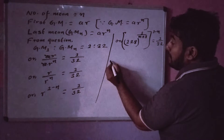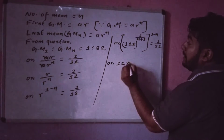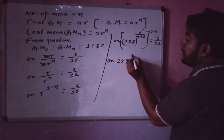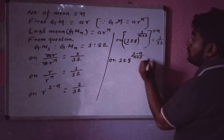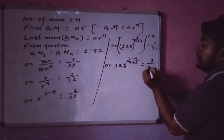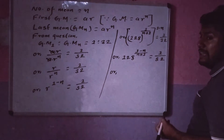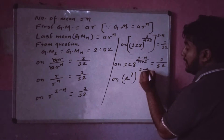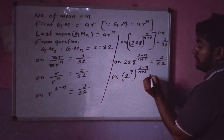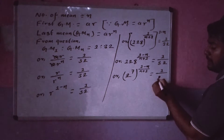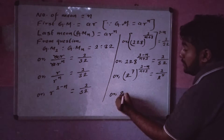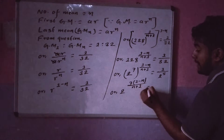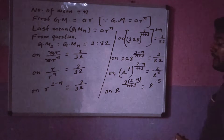Now substituting R equal to b by a all to the power 1 by n plus 1, we get 1 minus n divided by n plus 1 equal to 1 by 32. Since 32 is 2 to the power 5, and 2 to the power of n plus 1 times 1 minus n divided by n plus 1 equals 2 to the power of minus 5.